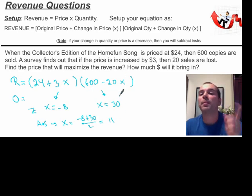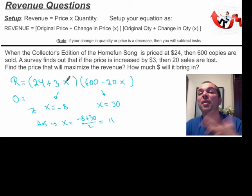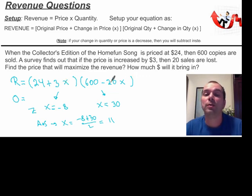That doesn't mean I'm raising the price by 11. I'm saying that X is equal to 11. So then 3 times 11 gives me 33. So actually, I'm going to increase the price by $33. And I will lose 20 times 11, whatever that turns out to be. So now we did the zeros. Now I have the axis of symmetry.